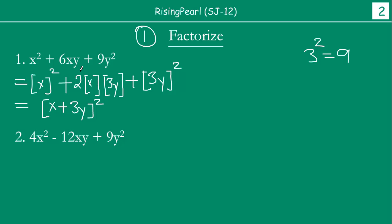So we took the given expression and were able to find its two factors. Now, you might ask whether we could have used middle term factorization instead. Yes, you can definitely try middle term factorization, and you will still come up with the same two factors. Let us now take a look at the next example.